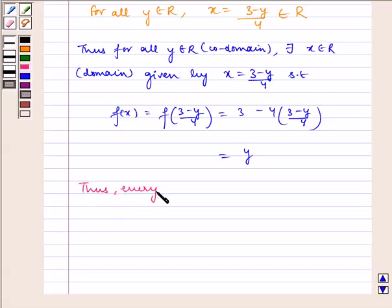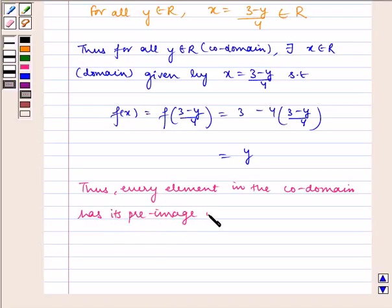Thus, every element in the codomain has its pre-image x. Thus, f is onto.